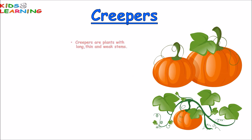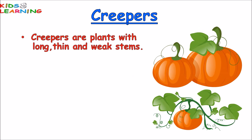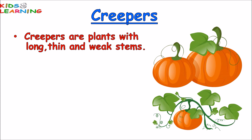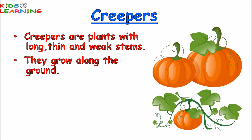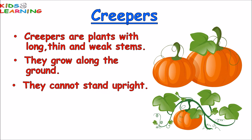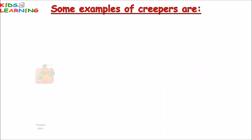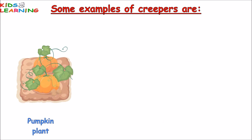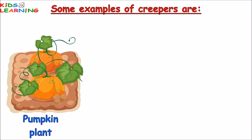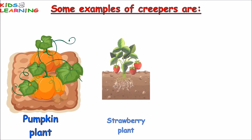Creepers. Creepers are plants with long, thin and weak stems. They grow along the ground. They cannot stand upright. Some examples of creepers are the Pumpkin plant, Strawberry plant, and Watermelon plant.